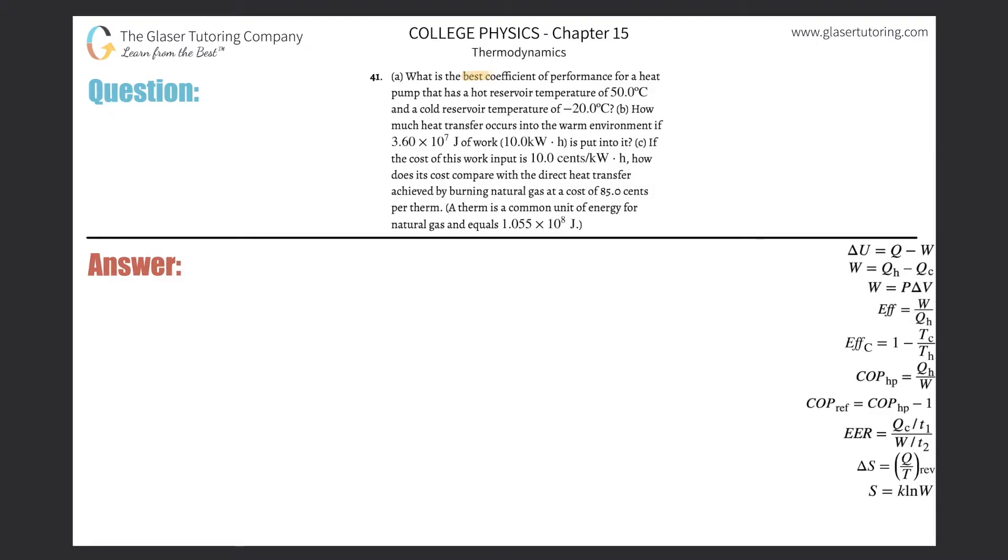Number 41. What is the best coefficient of performance for a heat pump that has a hot reservoir temperature of 50 degrees Celsius and a cold reservoir temperature of negative 20 degrees Celsius? All right, so I'm going to use a formula I developed in number 37, so please check that number out, number 37 here in this chapter, for how I arrived at this formula.